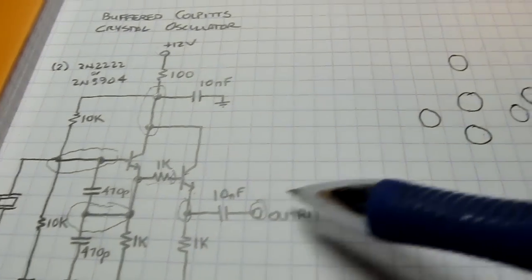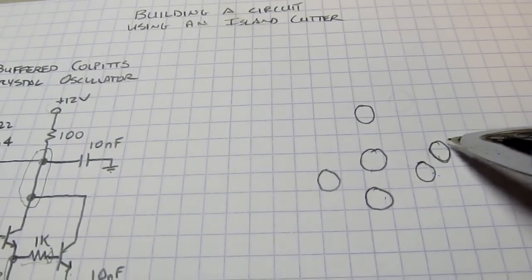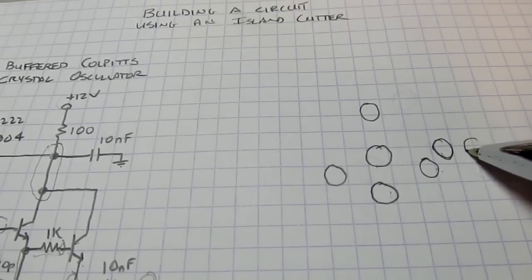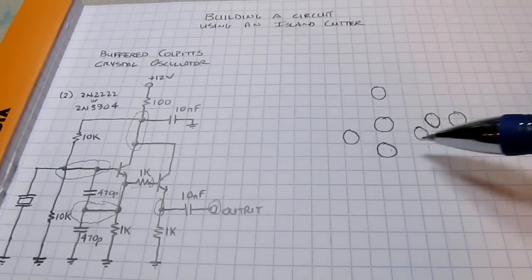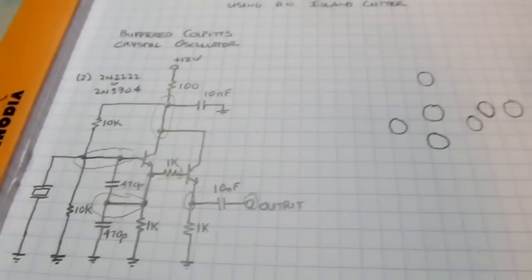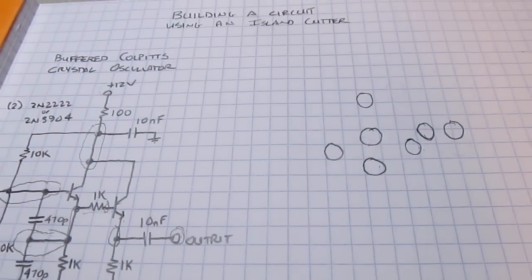So this resistor goes to ground, so that's okay. We just have a capacitor to go to the output, and that can come anywhere adjacent to this one here. So now I've got the basic island layout that will kind of work for this circuit. So what we need to do is kind of mimic that now on the circuit board.